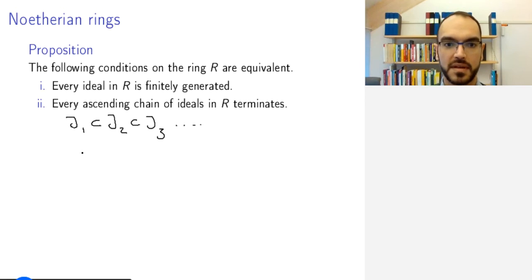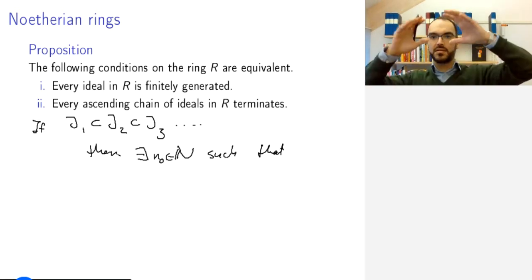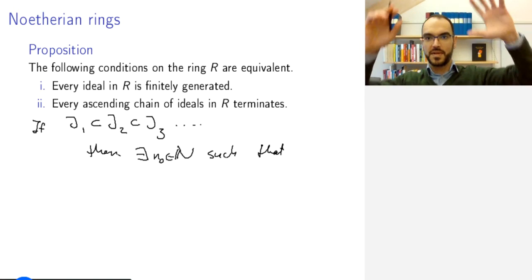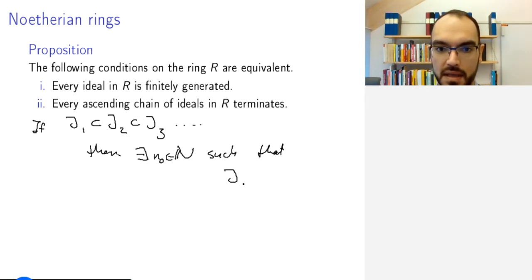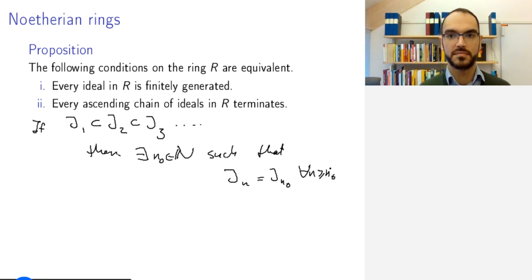The ascending chain condition says that these inclusions cannot be strict forever. If you have such inclusions, then there is a natural number N naught, such that the ideals may be increased until you get to that step, and then it stops. JN equals JN naught for all N greater than or equal to N naught. This is the ascending chain condition for this ring.